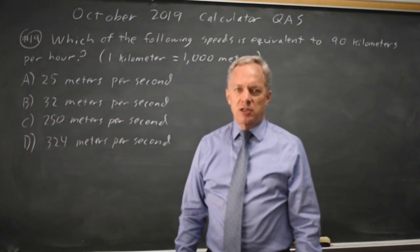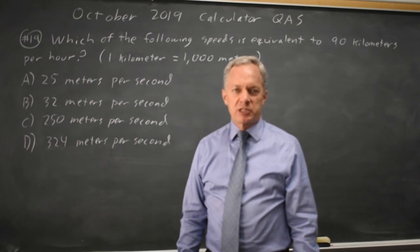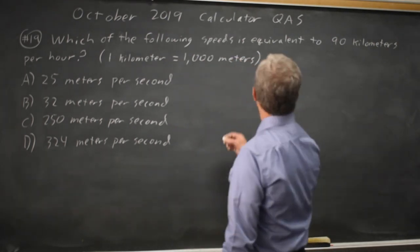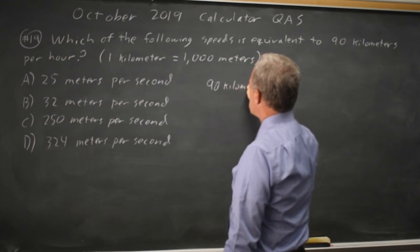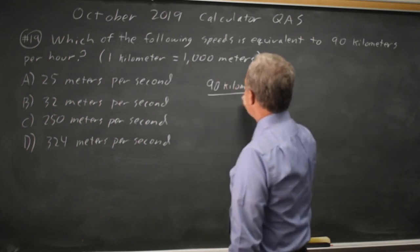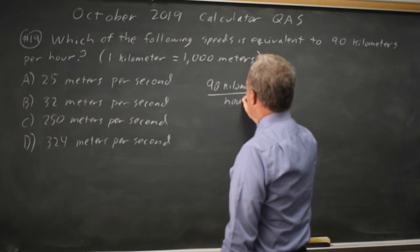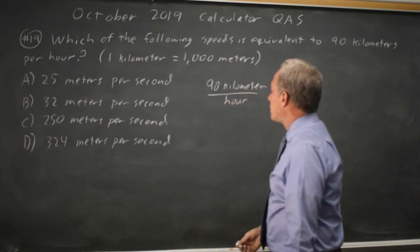This is question 19. College Board is asking us to convert units from kilometers per hour to meters per second. So I'm going to write 90 kilometers per hour, because per means divide by.